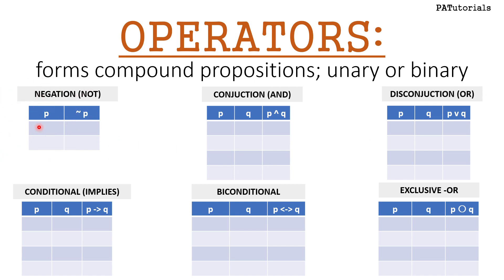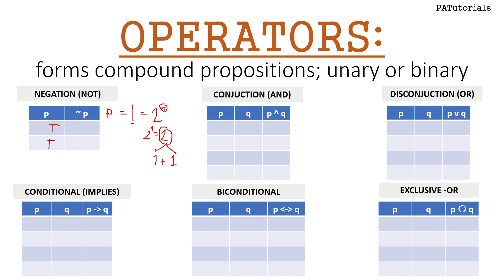Let's discuss negation. We have one propositional variable, p. Using the formula 2 raised to n, where n is the number of variables — so 2 raised to 1 equals 2 — we get two truth values: T (true) and F (false). When we negate true we get false, and when we negate false we get true.